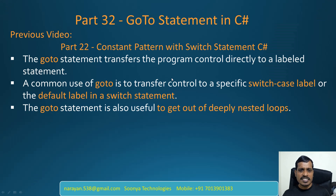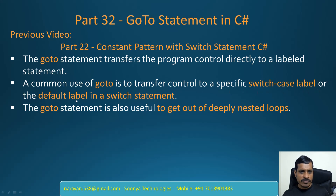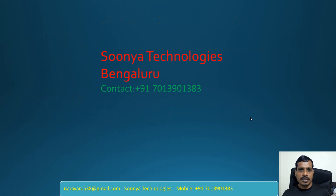What we discussed in this program: the goto statement transfers the program control directly to a labeled statement. A common use of goto is to transfer control to a specific switch case label or the default label in a switch statement. The goto statement is also useful to get out of deeply nested loops. That's it for today. If you like this video, please share with your friends and subscribe to my YouTube channel for future videos. Thank you for watching, have a nice day.